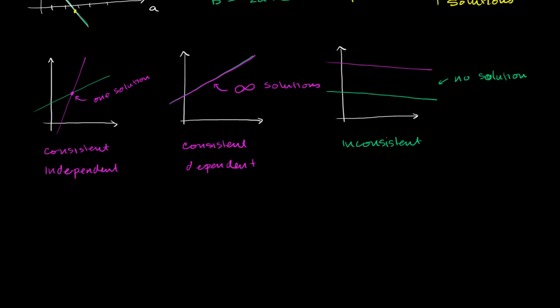If you think about what's going on: in the first case, you have different slopes — two different lines with different slopes are definitely going to intersect in exactly one place. In the second case, they have the same slope and same y-intercept, giving an infinite number of solutions. In the third case, you have the same slope but different y-intercepts, so you get no solutions.